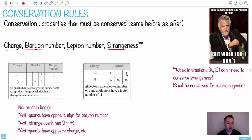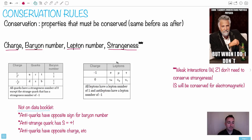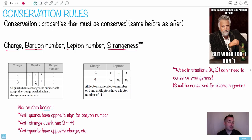Leptons all have a lepton number of one, except antiparticles. So the antielectron has a lepton number of minus one. Remember, antiparticles have opposite properties. Finally, we have something called strangeness — this is a little bit weird. All quarks have a strangeness number of zero, except the strange quark, oddly enough. It has a strangeness of minus one. That's what makes it strange.